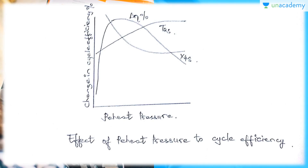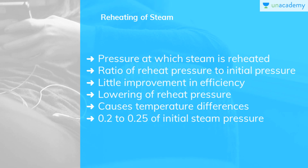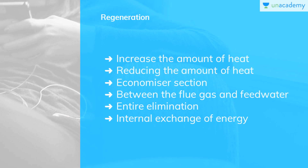You can see the effect of reheat pressure on cycle efficiency — the delta efficiency, T2s, and X4s, the quality of steam. The reheating pressure at which steam is reheated is 0.2 to 0.25 of the initial steam pressure. Moving on to regeneration — in order to increase the mean temperature of heat addition and to reduce the external thermal irreversibility, the mean temperature of heat addition can also be increased by reducing the amount of heat added at lower temperatures in the economizer section. This irreversibility could be entirely eliminated if the feed water could enter the steam generator at saturated liquid state, which is possible by the process of regeneration, in which energy is exchanged internally between the expanding fluid in the turbine and the compressing fluid before heat addition.